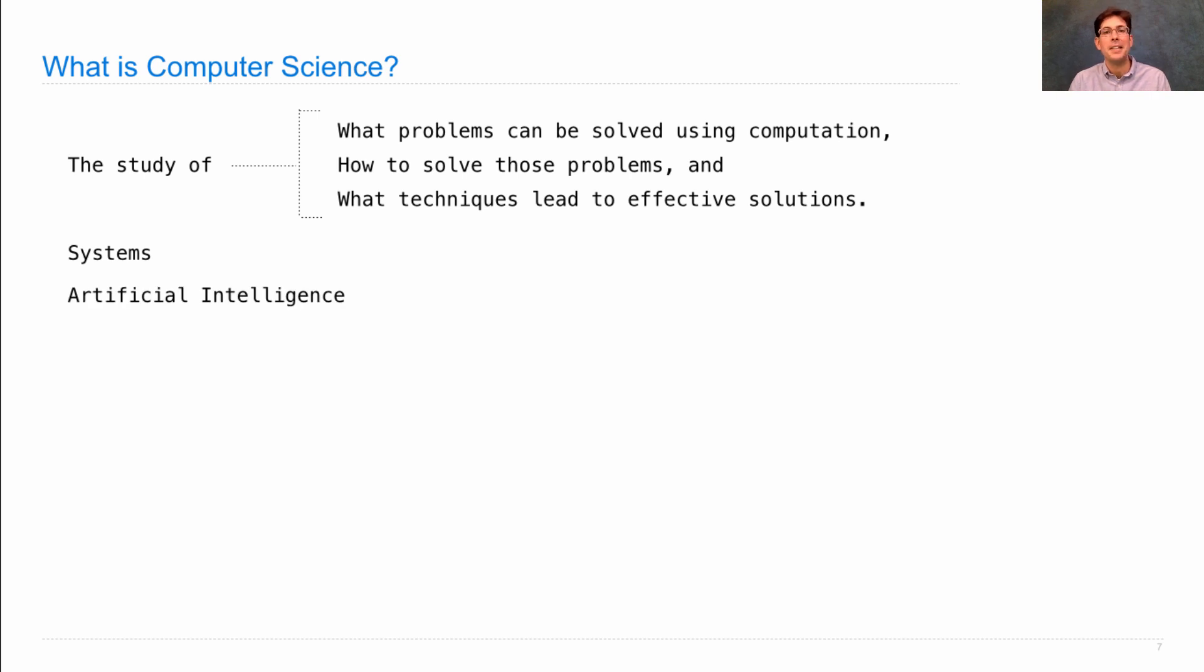Artificial intelligence is the study of how to get computers to do things that living things are good at, like recognizing faces and photographs. Graphics makes beautiful movies and video games. Security makes sure that you can go about your business on the internet without the NSA snooping around. And all of these other fields deal with other problems that arise when you try to apply computing to solve the world's problems.